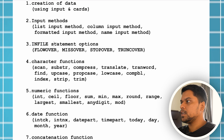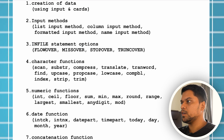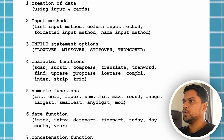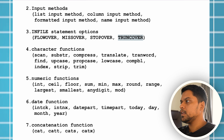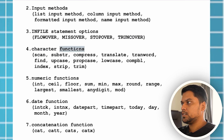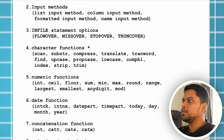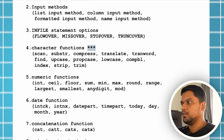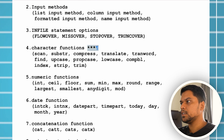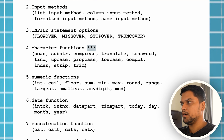In the file statement — flow over, miss over, stop over, turn cover — and then character functions. Character functions are very important, guys. The ones I'll be giving three stars are very important.